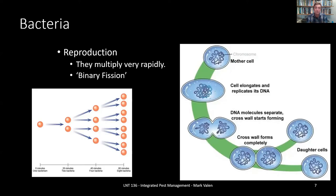When bacteria reproduce, they multiply very rapidly through a process called binary fission, which is an exponential growth process. In 20 minutes, one bacterium will become two bacteria, then 20 minutes later those two become four, then eight, and so on. Very quickly over time you have rapid population growth when the environment and the host are aligned with the disease-causing organism.